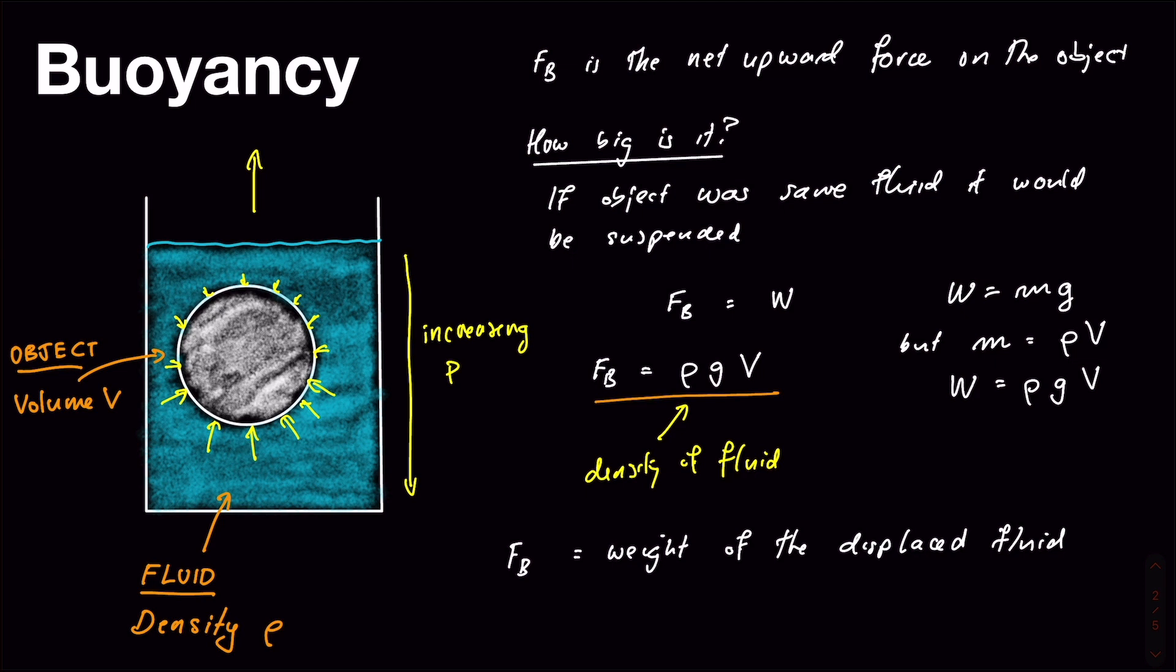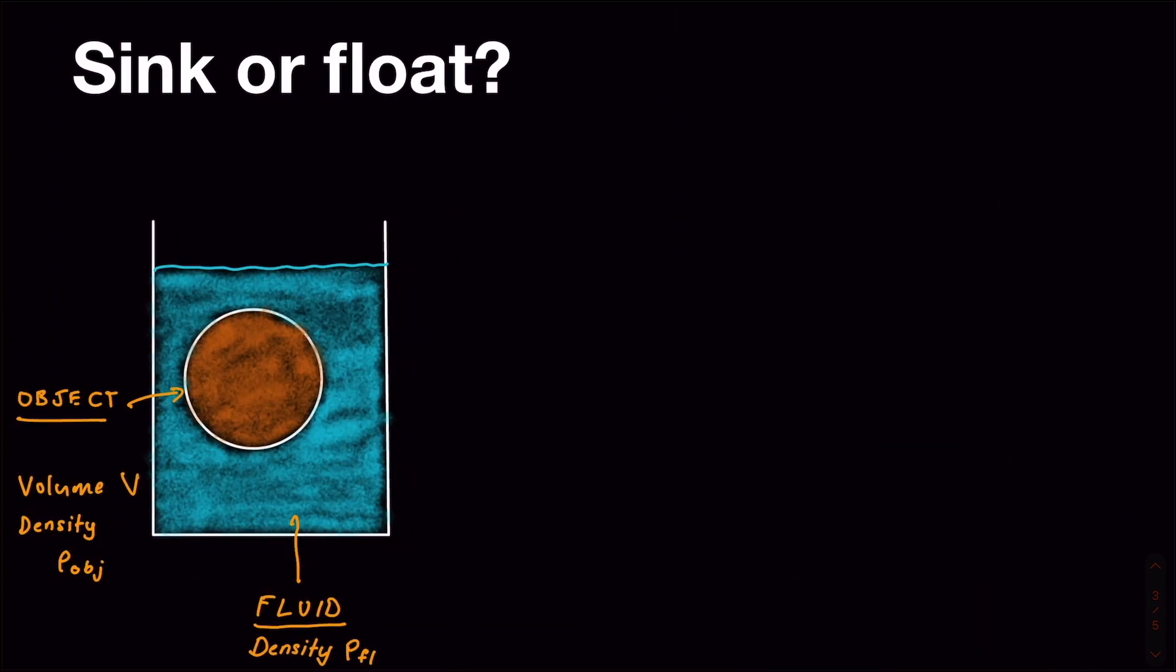So the next question that we might want to ask ourselves is what determines whether an object will sink or float? Because the sort of the notion of buoyancy kind of suggests things that float, right? So back to our sort of setup. Now we've got an object, just a generic object that has a volume of V, and this time we've sort of defined a density of rho for the object, and we'll call that rho obj, that's this one here, and then the fluid has density rho fl, just to sort of distinguish between the two. So will an object float? Well it will float if the buoyancy force is greater than its weight force. So the answer is yes, if Fb is greater than the weight of our object.